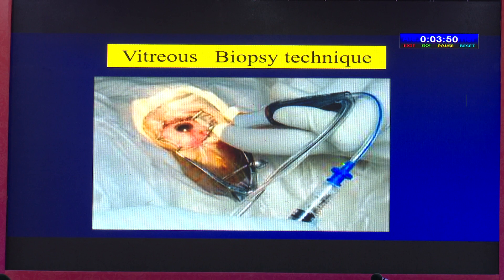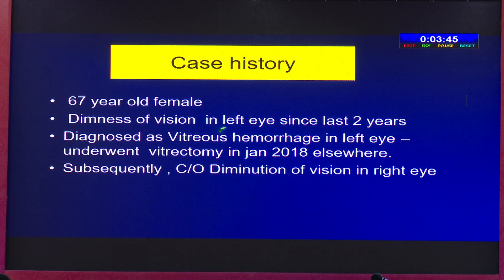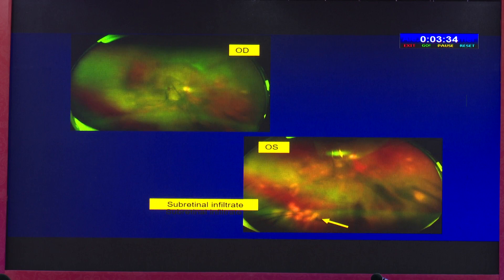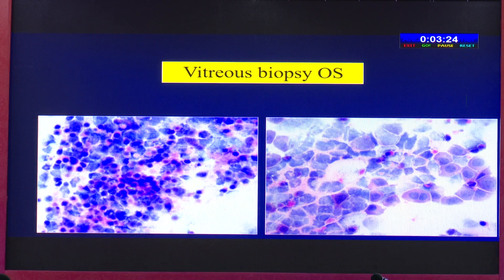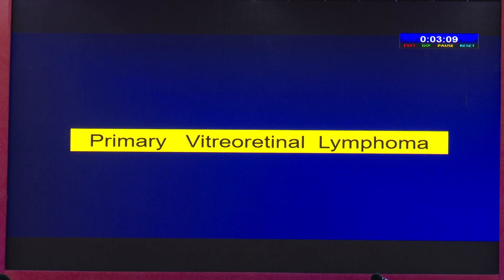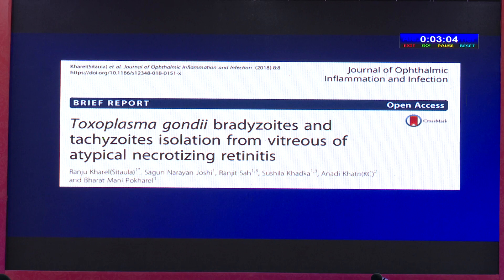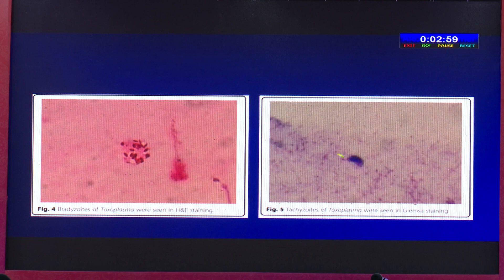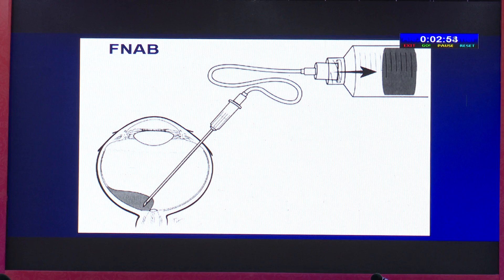Here is the vitreous biopsy taken with aspiration syringes. An example: a 67-year-old female with dimness of vision in the left eye for two years had developed vitreous hemorrhage and underwent vitrectomy, then complained of dimness of vision in the right eye. Vitreous biopsy showed clumps of tumor cells with hyperchromatic nuclei and scant cytoplasm, and bilobed pleomorphic nuclei — a diagnosis of primary vitreoretinal lymphoma. Infectious agents like Toxoplasma gondii can also be found in vitreous aspirate if the pathologist carefully examines the smear.